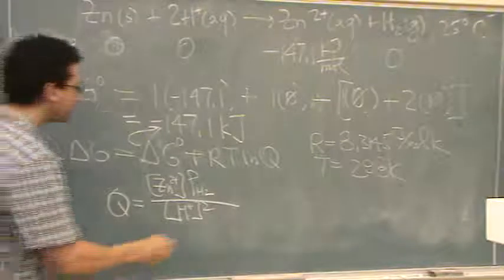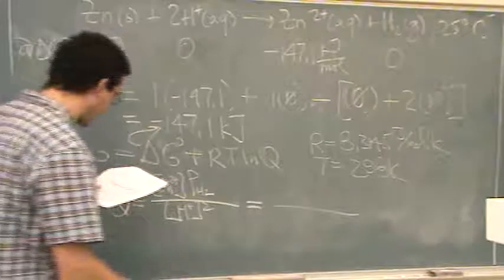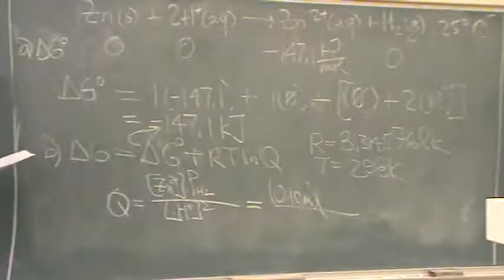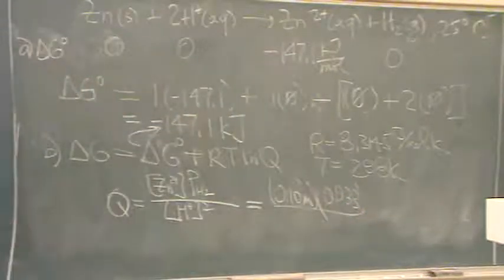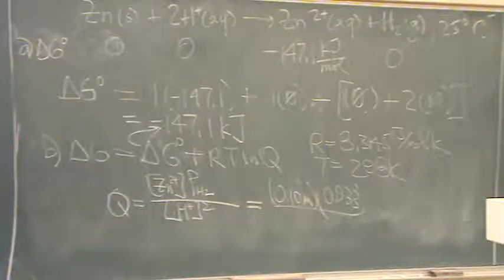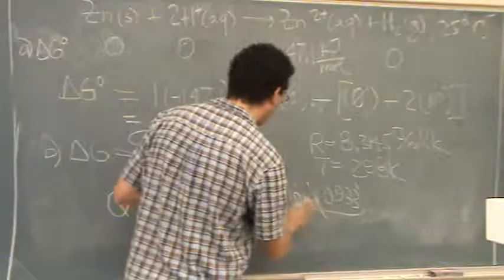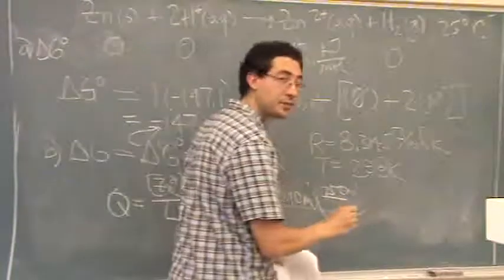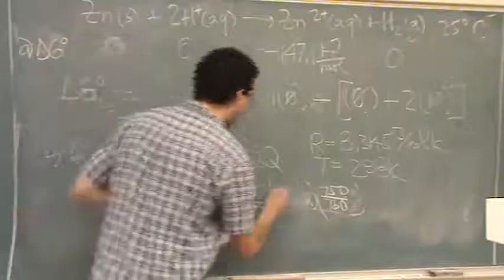Let's plug in. What's given? All these values are given in the question. So it tells you that the zinc 2 plus concentration is 0.10 molar. It tells you that the partial pressure of H2 is, oh I'm looking at the wrong one. So this one is 750 millimeters of mercury. I should change that to atmospheres whenever I do a Kp. So divide by 760.